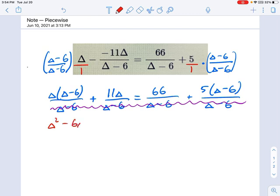Delta squared minus six delta plus 11 delta equals 66 plus five delta minus 30.